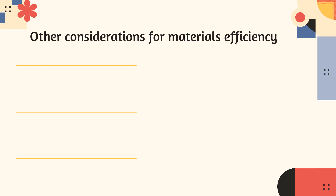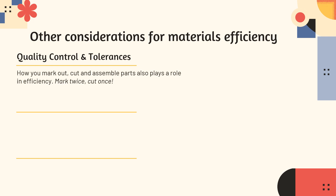Before we move on, just a few other considerations to be really efficient with the materials you're using. We always need to keep quality control in mind and think about our tolerances. How you mark out, cut, and assemble parts plays a role in efficiency. You've probably heard the old saying: mark twice, cut once — and I couldn't say it often enough. Patterns, templates, and jigs can all help here: you can place something down, drill the same hole, mark the same piece, and you'll be much more accurate.